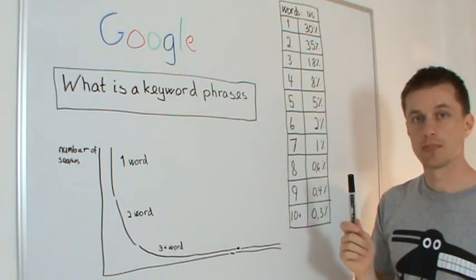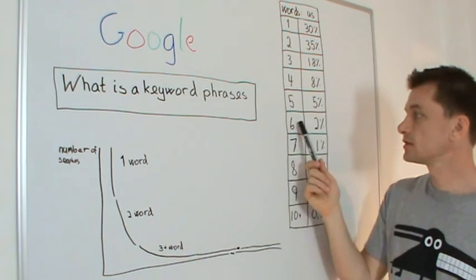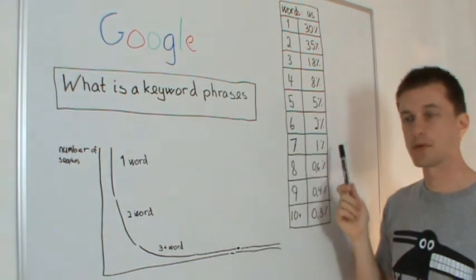Three words: 18%. Four words: 8%. Five words: 5%. Six words: 2%. Seven words: 1%.